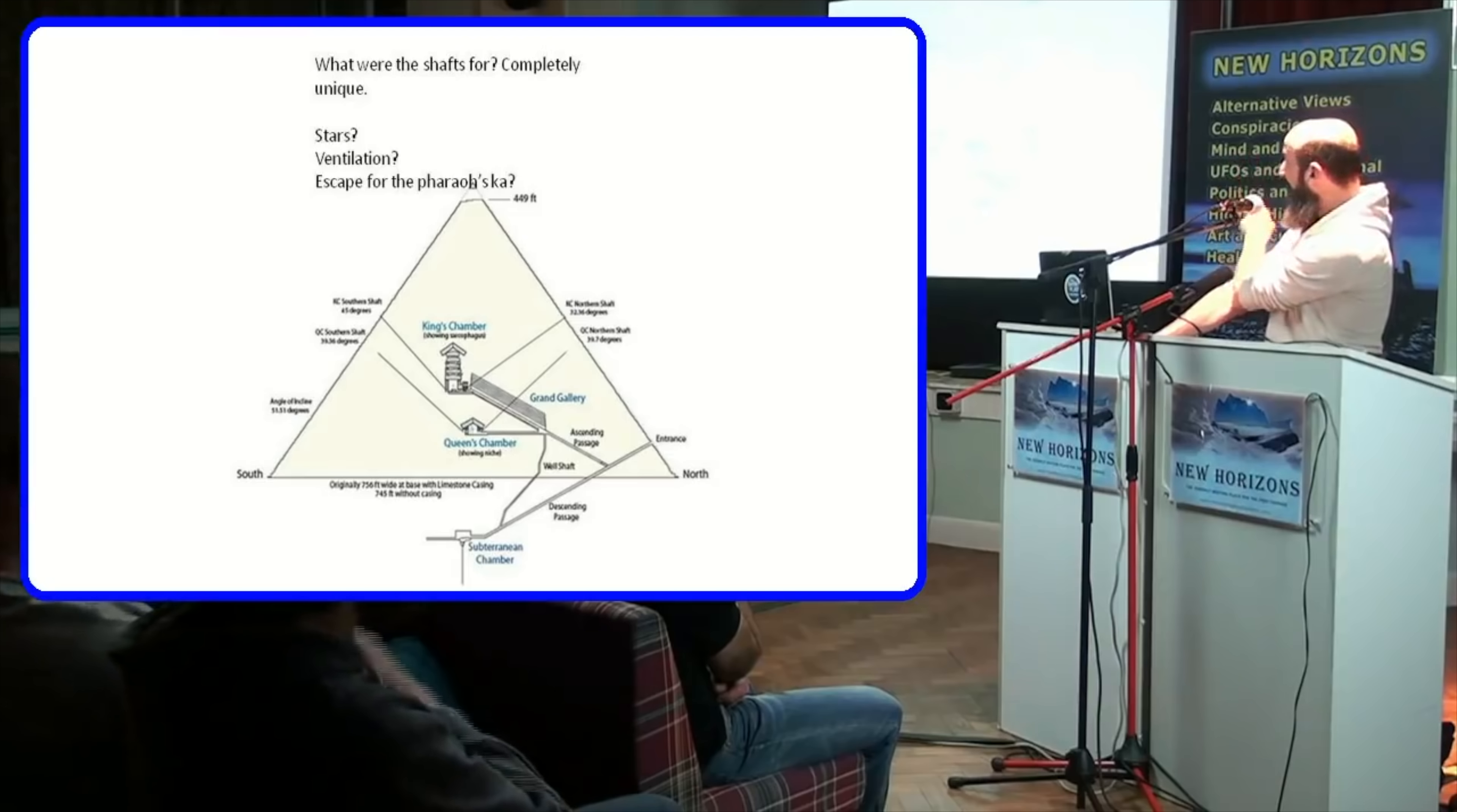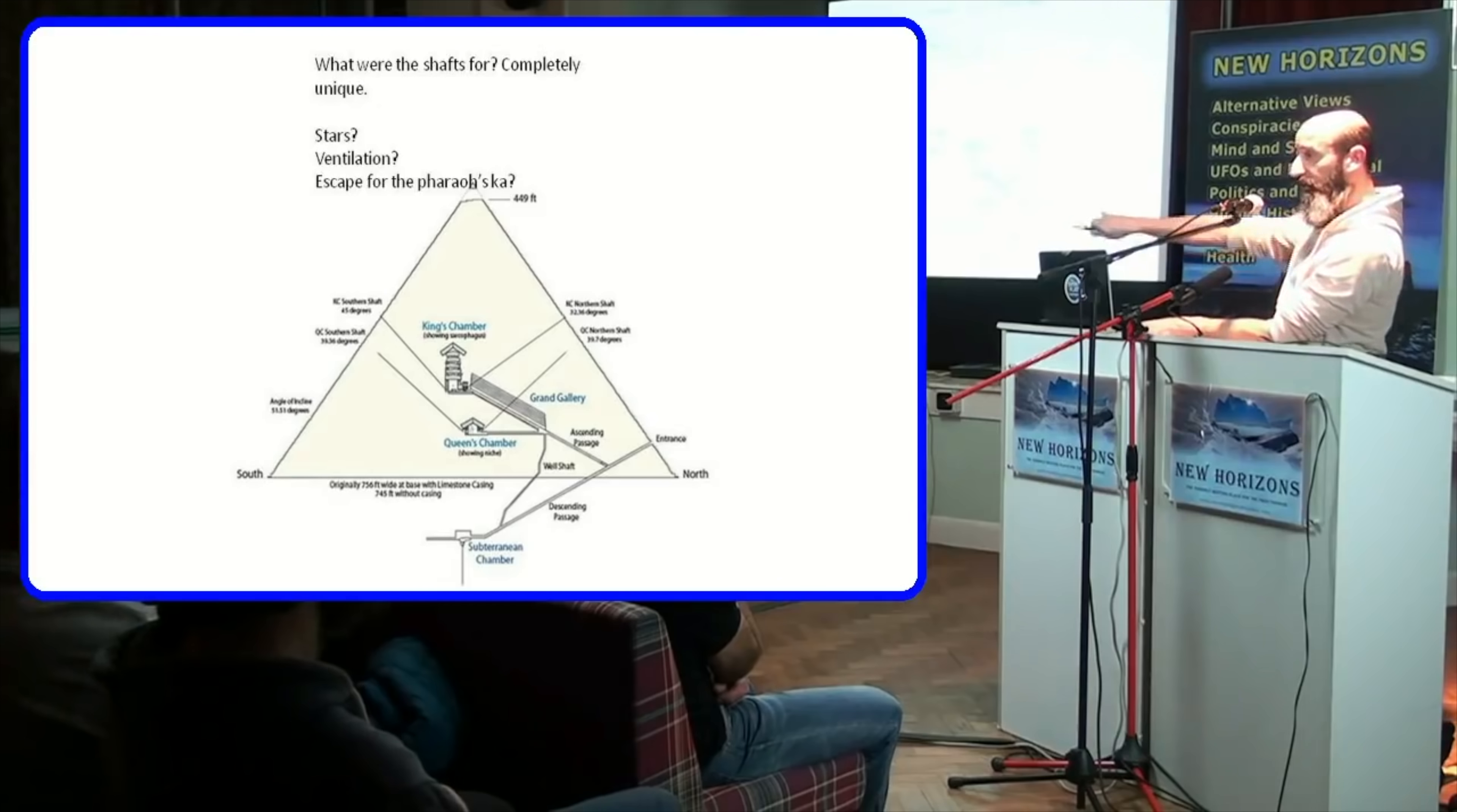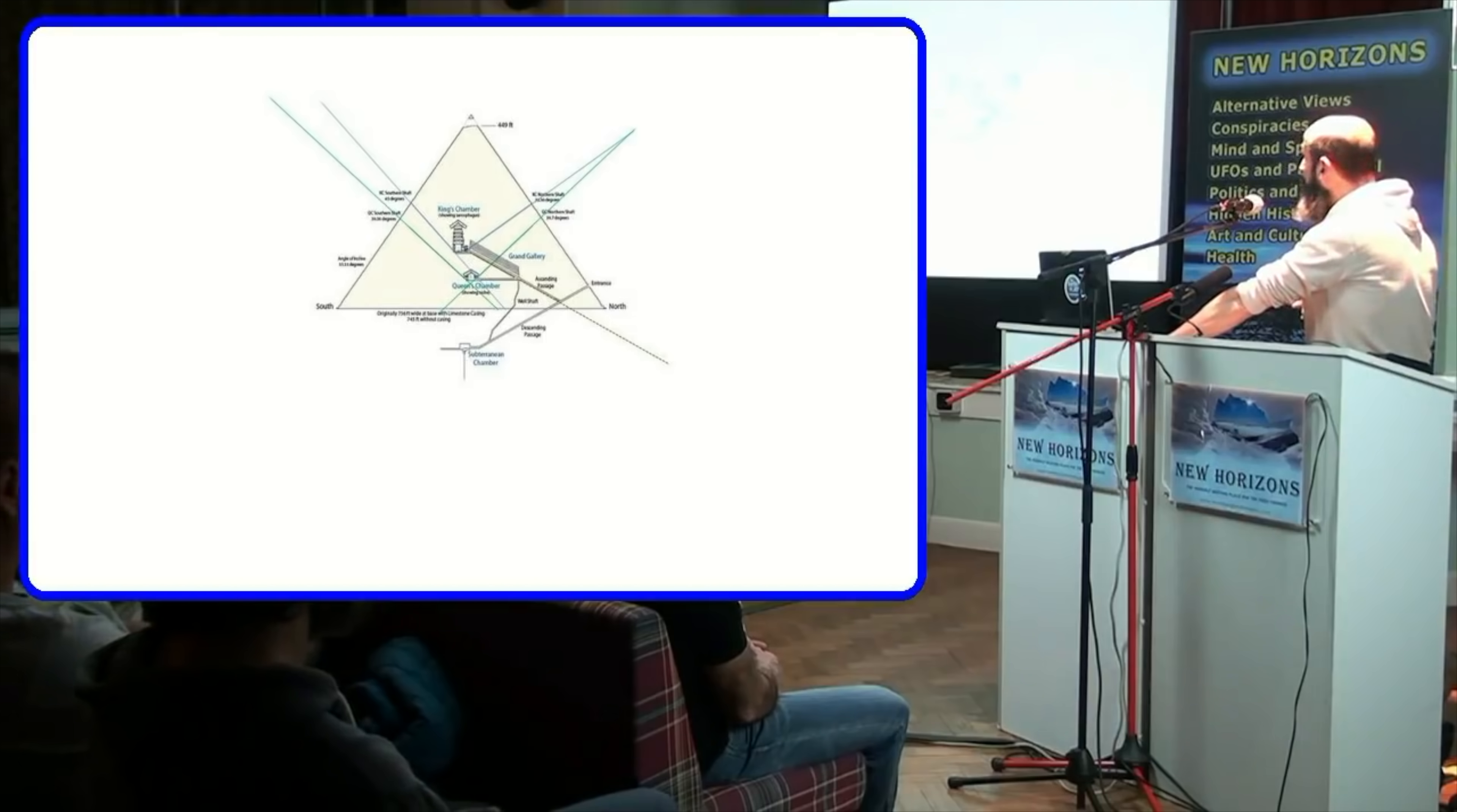The top is going to be completely open until the capstone is put on, so you're going to have ventilation all the way up. The queen's chamber shafts actually go along for six feet horizontally first and then they go up, so you're not going to make good ventilation shafts.